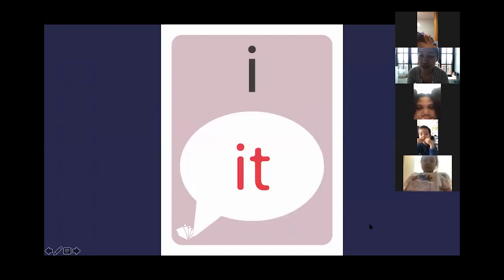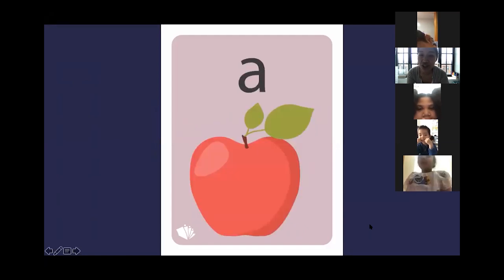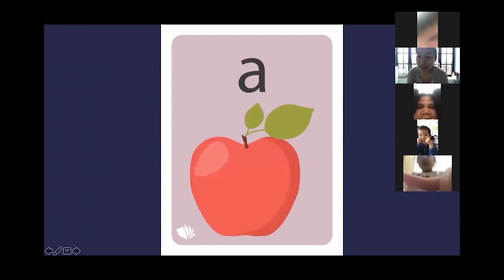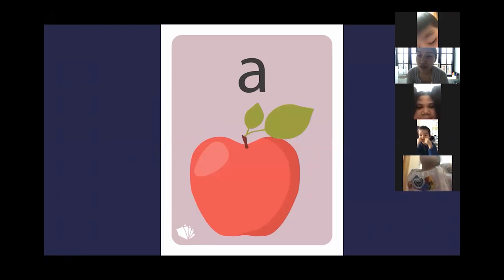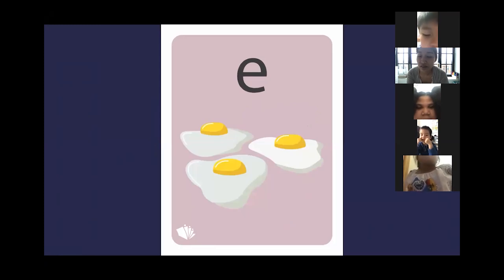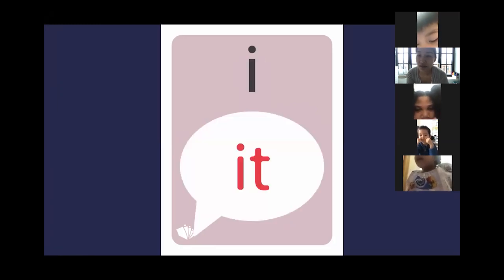Good. Let's do some individual turns. Listen for your name. Izzy, go. A, apple, A. E, egg, A.